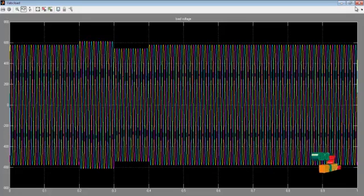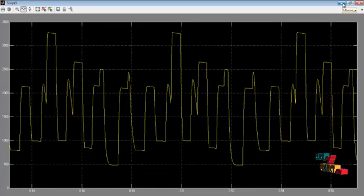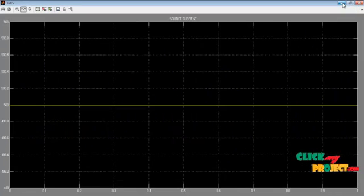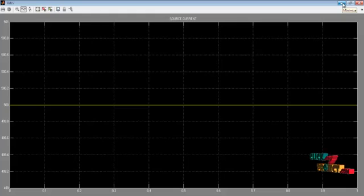So this is the voltage waveform in the output load side. And this is the corresponding nonlinear load output waveforms. And this is the shunt active power filter input waveform 500 volt.